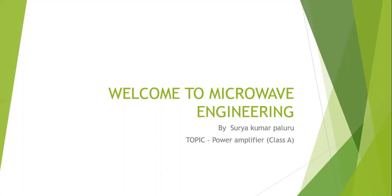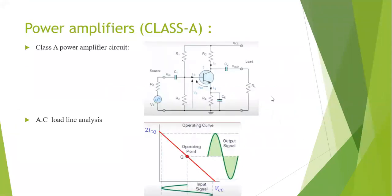Today we are going to discuss and analyze the class A power amplifier. On your screen you can see a circuit — it is a BJT-based class A power amplifier. The output of a class A power amplifier is an inverted and amplified version of the input signal. Class A power amplifier conducts for 360 degrees of the input signal. There are no distortions in class A. The only disadvantage is its efficiency; the maximum theoretical efficiency is 25 percent.